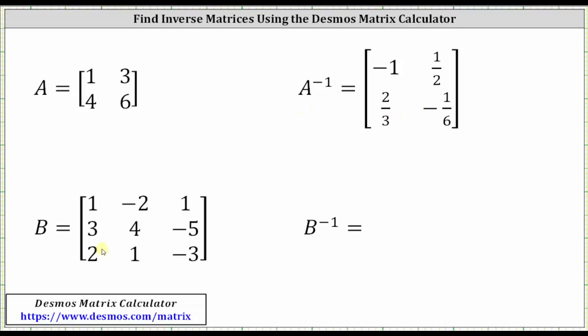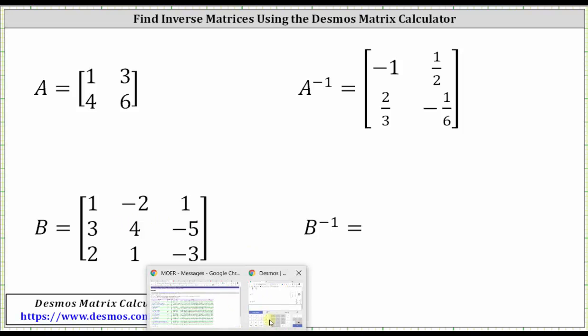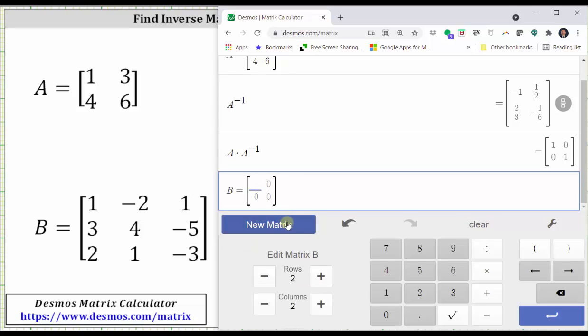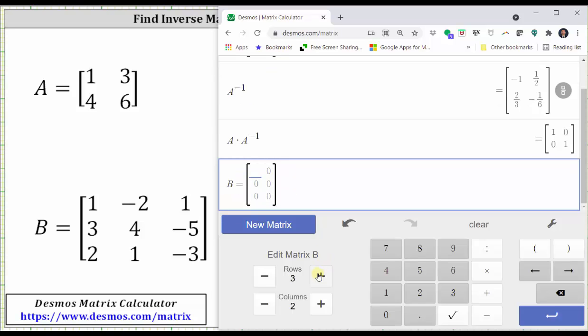Now let's find the inverse of matrix B. Notice matrix B is a three by three matrix. Going back to the calculator, click new matrix. By default, it is labeled matrix B, but right now matrix B is a two by two matrix. We need to add one row and one column to make it a three by three matrix.